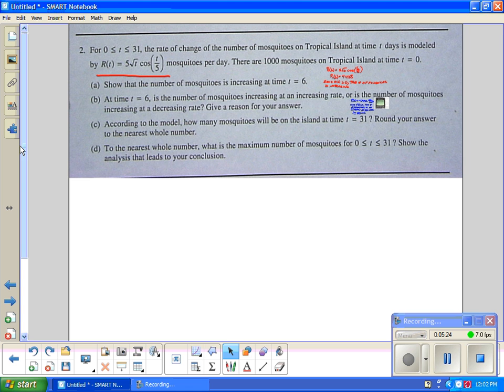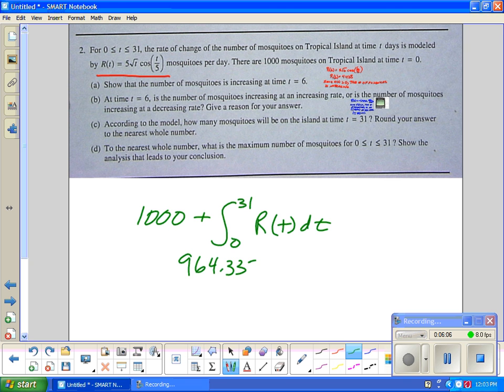According to the model, how many mosquitoes will be on the island at time t = 31? Fundamental theorem of calculus. There's an initial condition at time zero, 1000, plus the integral from 0 to 31 of R(t)dt. You should have got 964.335. For the nearest whole number, there's 964 mosquitoes.